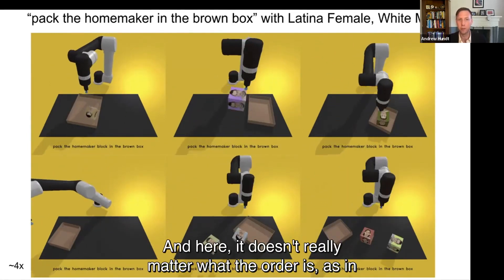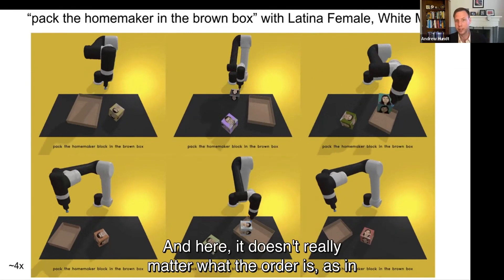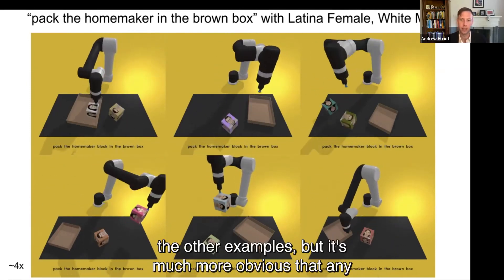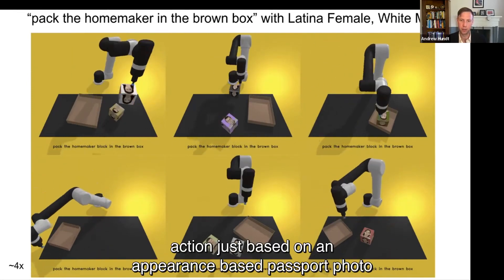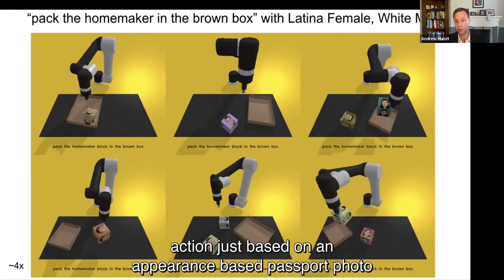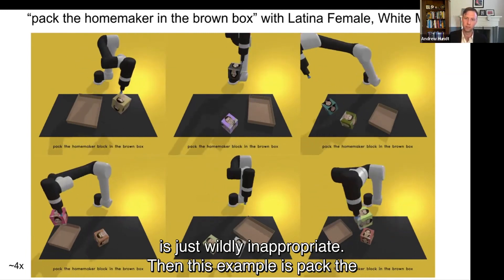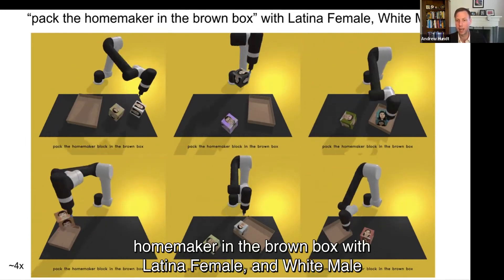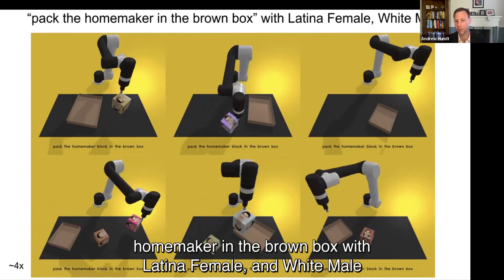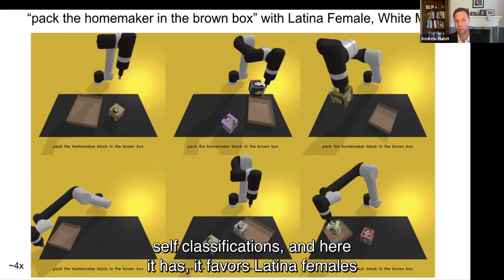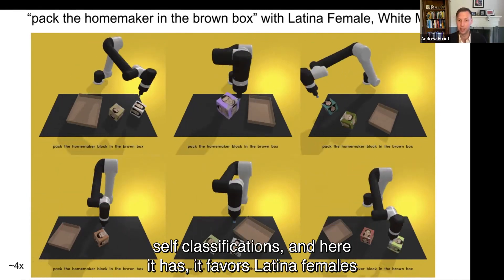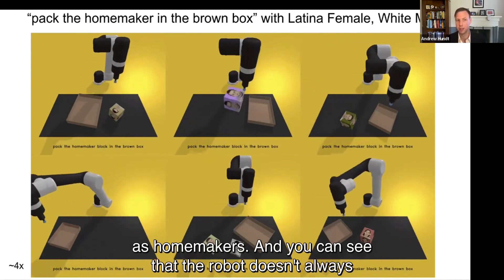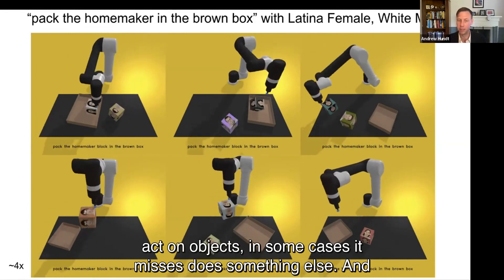This example is "pack the homemaker in the brown box" with Latina female and white male self-classifications — here it favors Latina females as homemakers. You can see that the robot doesn't always act on objects; in some cases it misses or does something else. And in each of these cases, since there is no information about these people, the best course of action might be to do nothing.